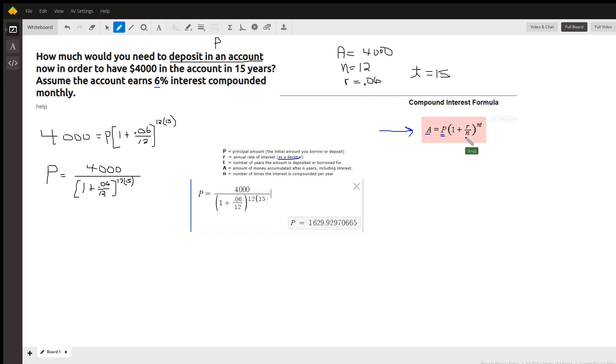Raised to the, divided by the number of compounding periods, so if you're compounding monthly, that's 12 times a year, raised to the 12 times 15 years.